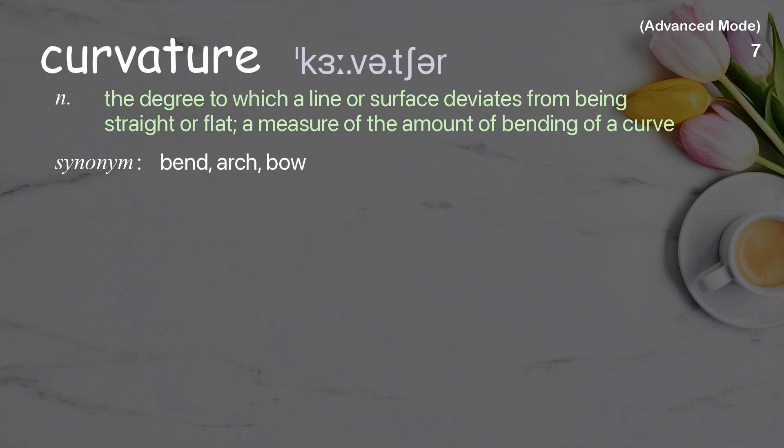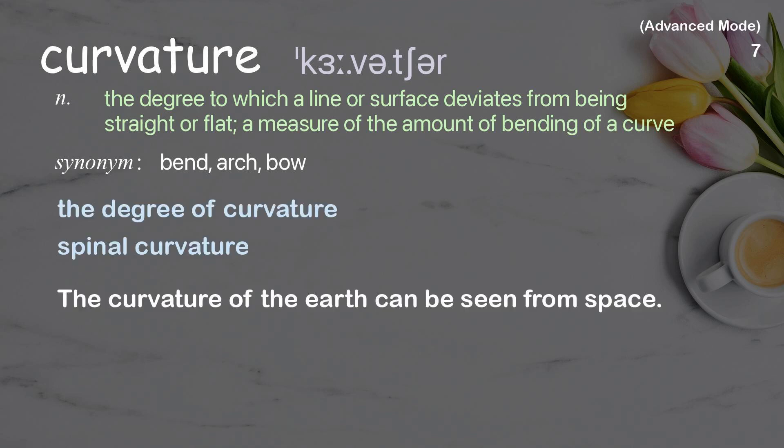Curvature: the degree to which a line or surface deviates from being straight or flat; a measure of the amount of bending of a curve. Examples: the degree of curvature, spinal curvature. The curvature of the earth can be seen from space.